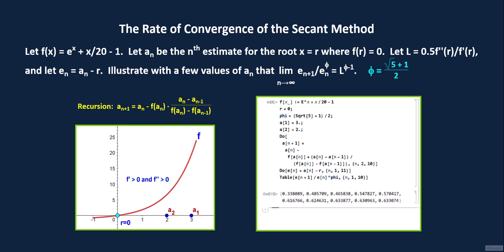Here are the first 10 values of the sequence. The table of values is only a finite set, and so it's not necessarily conclusive. But it does seem to hint that the sequence is tending to some value close to approximately 0.63, with the last value being 0.633074. This sequence should converge to l raised to the phi minus 1th power. l equals 0.5 f double prime of r divided by f prime of r, which one can check is equal to 10 divided by 21, or 0.47619 up to 6 significant digits.